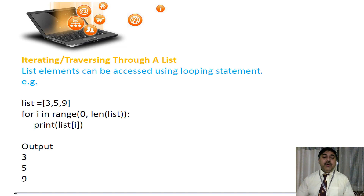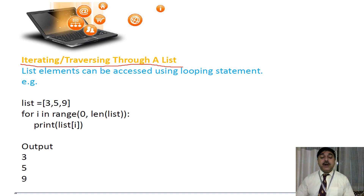In this particular list, I will show you iterating or traversing through the list. Iterating means calling something again and again, and traversing means to go through it. How can you call it again and again, how can you bring the value again and again — that particular thing is called iterating and traversing through a list. To do this, we have to use a loop.